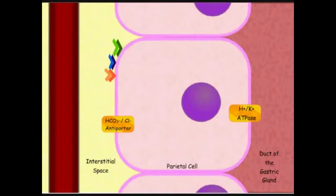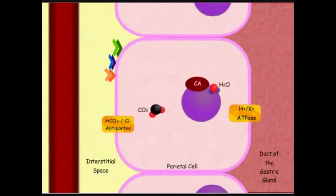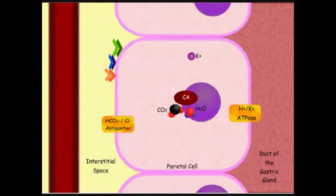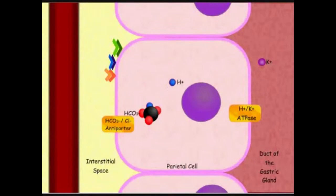Carbon dioxide diffuses into the cell and the enzyme carbonic anhydrase catalyzes the reaction between carbon dioxide and water to form carbonic acid. Carbonic acid then dissociates into bicarbonate ion and hydrogen ion.